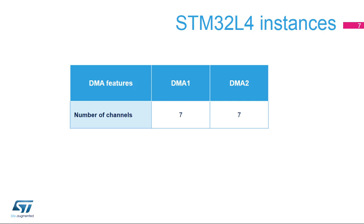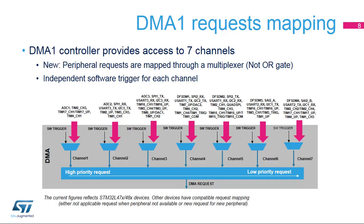The STM32L4 implements two instances of the DMA with seven channels each. DMA1 peripheral requests are mapped through a multiplexer for each corresponding channel. Each channel has a fixed group of peripheral requests, and the multiplexer allows only one peripheral request for each channel.